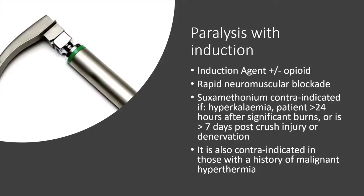Moving on to paralysis with induction. Our aim is to induce anaesthesia rapidly. Common induction agents include propofol and thiopental; common opioids we might use include fentanyl or alfentanil, the latter having the advantage of a faster onset of action. Rapid neuromuscular blockade is key. Suxamethonium is classically used, but is associated with an increased incidence of anaphylaxis and has key contraindications: hyperkalaemia, patients who are 24 hours after significant burns, or those greater than seven days post-crush injury or de-innervation, all of whom have up-regulation of acetylcholine receptors and a potentially increased risk of hyperkalaemia on induction.